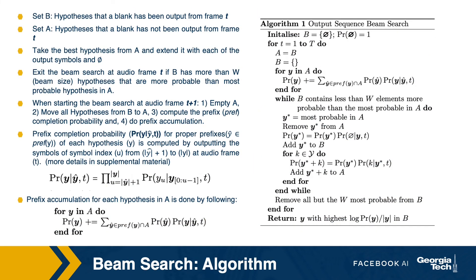By using the beam search criterion, we can exit the decoding at any audio frame T. At test time, if the audio has capital T frames, the algorithm starts at time frame one, continues decoding until the beam search criterion is met, then moves to time frame two, and so on until finishing at time frame T. Once all audio frames are decoded, the best hypothesis from the output of time frame T is the transcript of the audio.